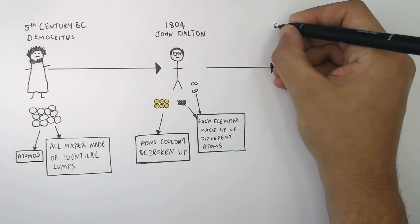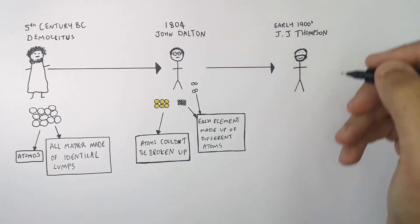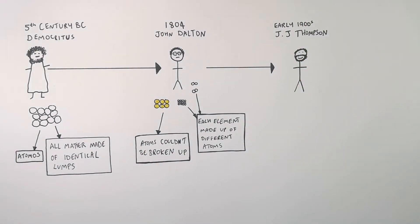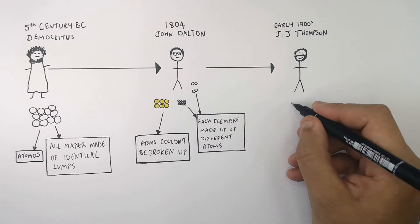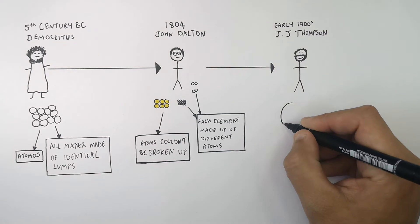In the early 1900s, J.J. Thompson discovered the electron, and it was J.J. Thompson who famously theorized the incorrect model of the atom, which he called the plum pudding model.